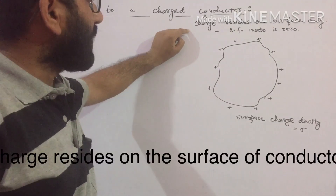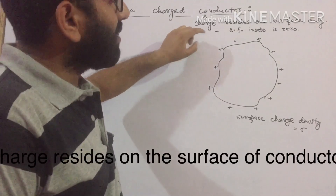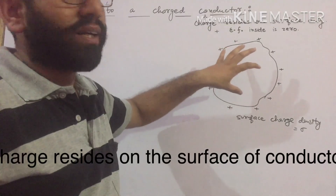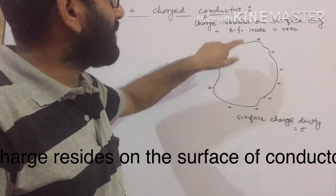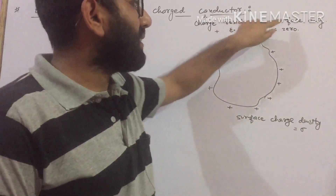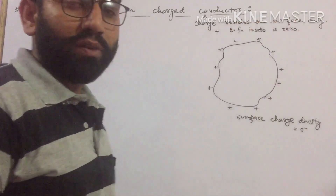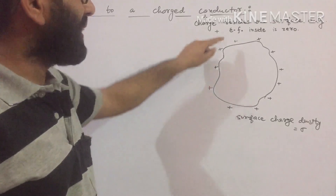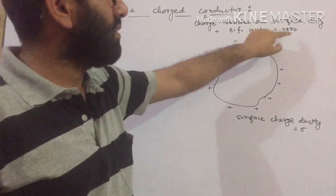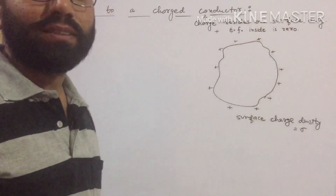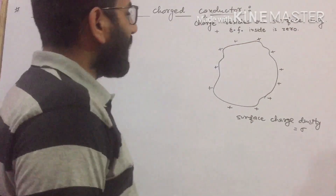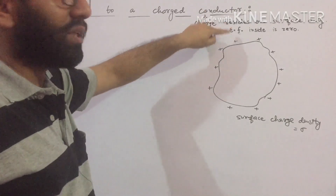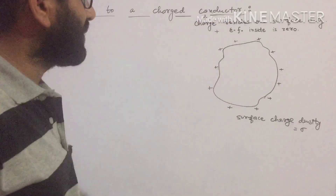The first property is that any charge given to a conductor resides on the surface only. The second property is that the electric field inside a conductor is zero. We will discuss these two concepts in detail later.